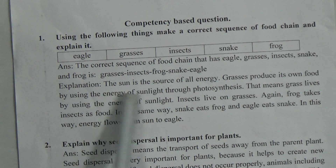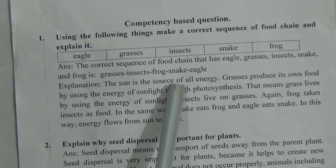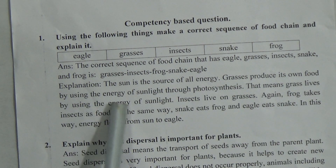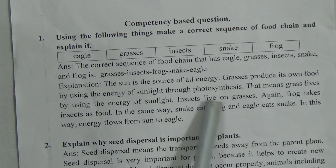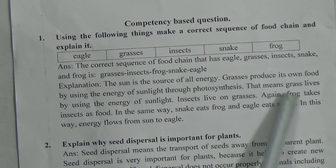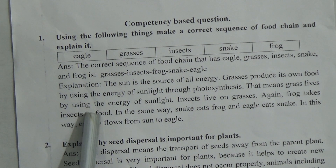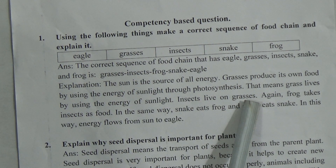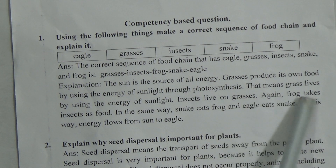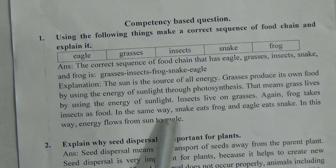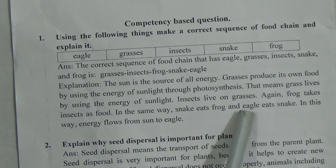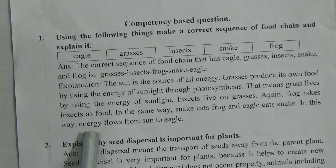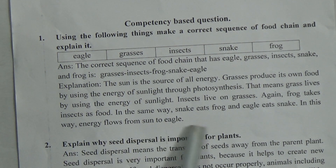Now we will explain: The sun is the source of all energy. Grasses produce their own food by using the energy of sunlight through photosynthesis. Insects live on grasses; frog takes insects as food. In the same way, snake eats frog and eagle eats snake. And in this way, energy flows from the sun to the eagle.